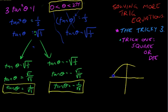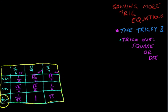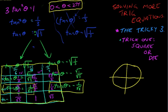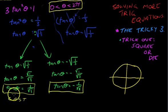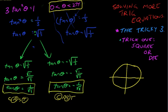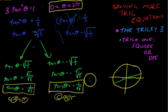So, unit circle. Tan theta equals one on root three — you can pull up your table or use your standard triangles. That's going to be pi on six. Now tan theta can be both positive and negative, so looking at my CAST diagram, the positive part exists in the first and third quadrants, and the negative part exists in the second and fourth quadrants. So I'm actually going to end up with four answers: pi on six in the first quadrant, pi on six in the third quadrant, and pi on six in the second quadrant, and pi on six in the fourth quadrant.